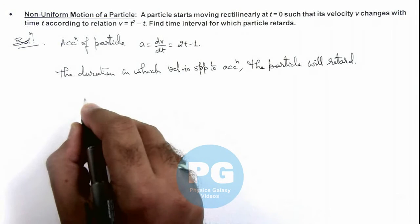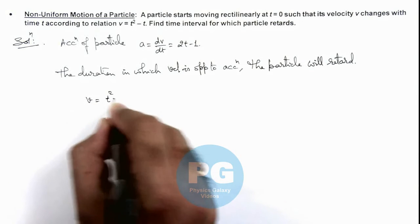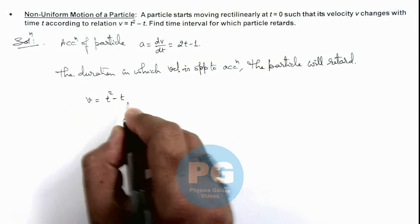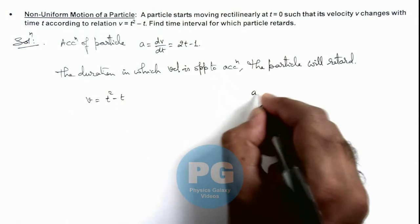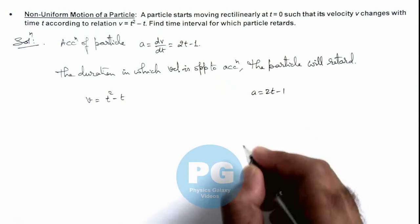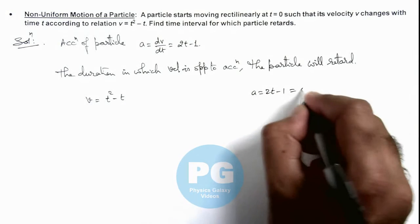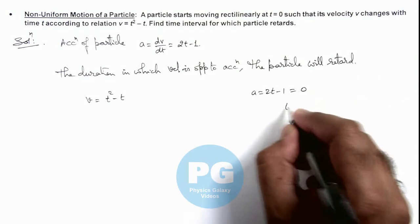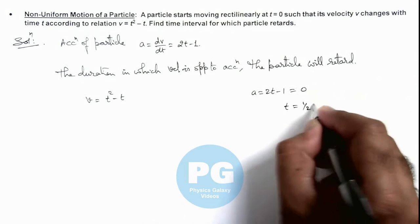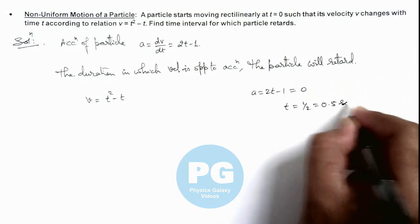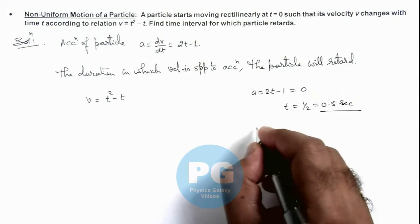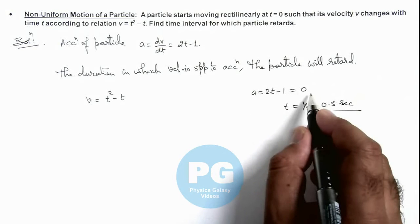So here we can write velocity v = t² - t and acceleration a = 2t - 1. If we equate this acceleration to zero, we get t = 1/2, that is 0.5 seconds. This means at t = 0.5 seconds, acceleration is zero.